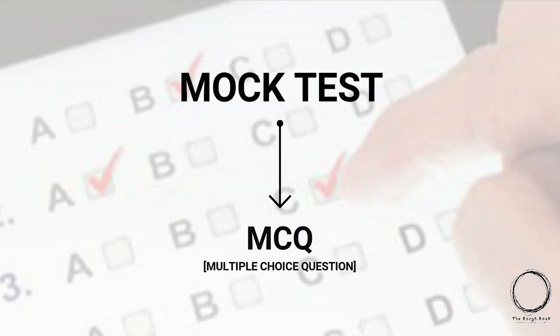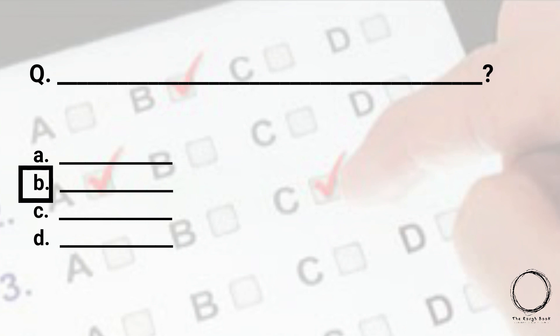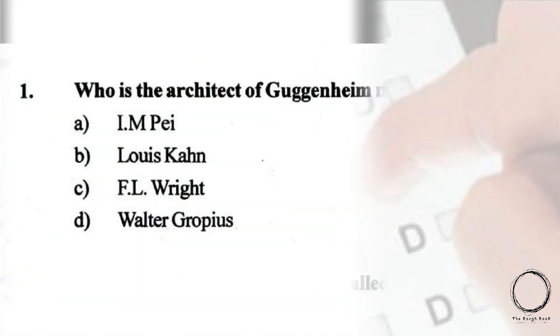Hi guys, welcome back. Today we are looking into another mock test with MCQ type questions. The drill remains the same — you will have one question with four options and one of the options is the right answer, unlike the MSQ type. The first question is: who is the architect of Guggenheim Museum? Options: A) I.M. Pei, B) Louis Kahn, C) F.L. Wright, D) Walter Gropius. The right answer is option C, F.L. Wright.